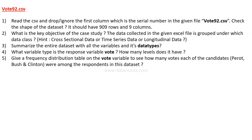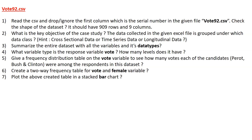Question four also asks how many levels the vote variable has — whether a person voted for Clinton, Bush, or Perot. Question five asks for a frequency distribution table on the vote variable, showing how many votes each candidate received among respondents. Question six asks for a two-way frequency table for vote and female variables to analyze data by gender. Question seven is to plot that table as a stacked bar chart.